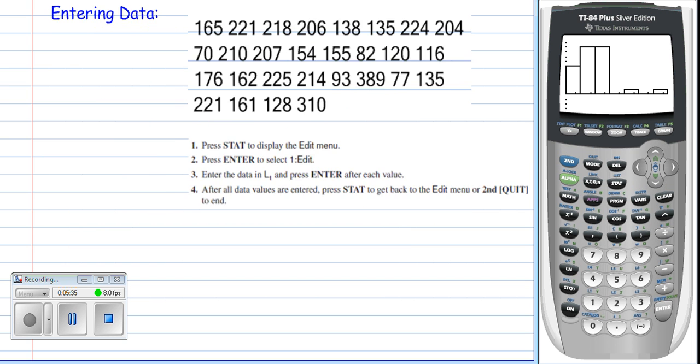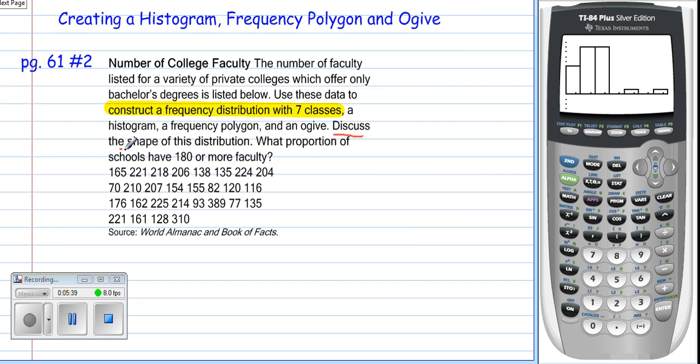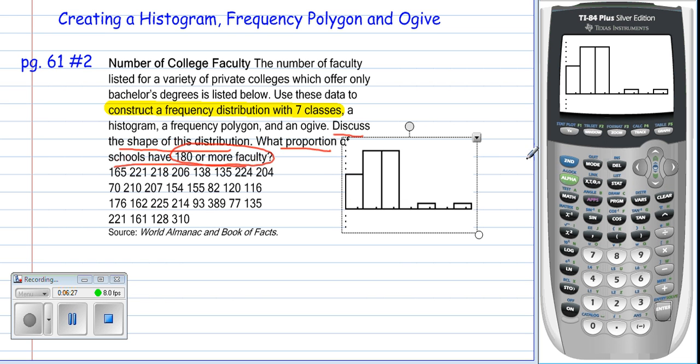Just for one moment if I can go back to the actual question. You'll remember that in here it says discuss the shape of the distribution and what proportion of the schools have 180 or more faculty. So let's focus on the shape of the distribution. Well in this case right here, the thing that I would say to everybody is look at where is your data mainly grouped. And in my personal opinion right here, this is going to be what we would call a right skewed graphical display.